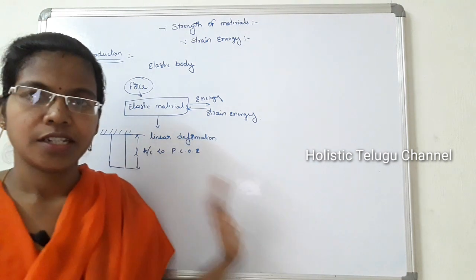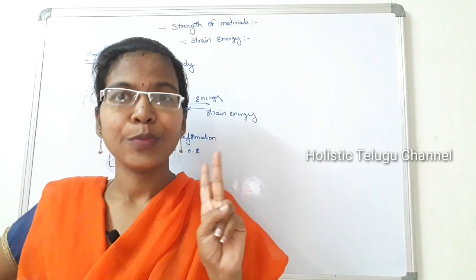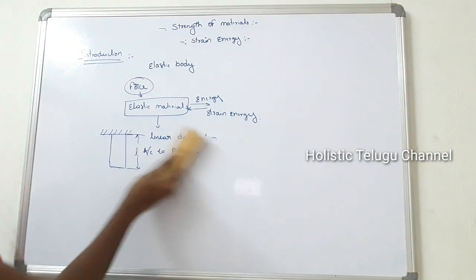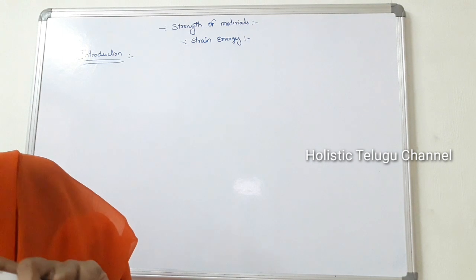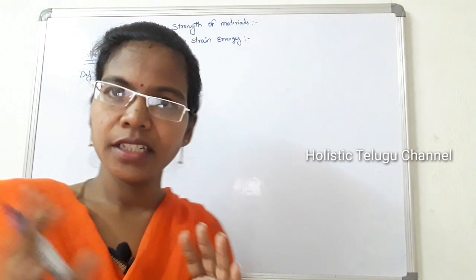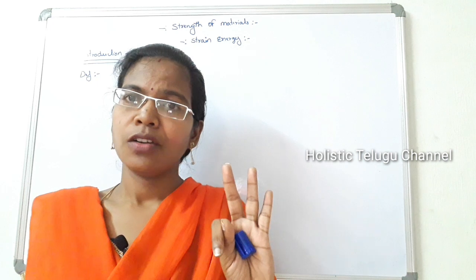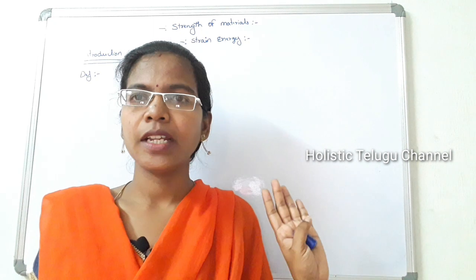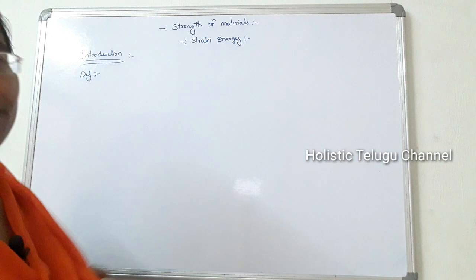This is the main introduction. In this introduction we have three topics: Definitions, Resilience, Proof Resilience, and Modulus of Resilience. For definitions, there are short answers. This unit covers strain energy and its derivation. There are three types: gradually applied load, suddenly applied load, and impact. These three derivations are based on the problem.